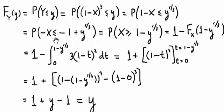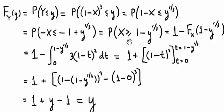Now if we subtract 1 from both sides of the inequality, we get the probability that negative X is less than or equal to negative 1 plus y to the 1 third. And then multiplying through by negative 1, we get the probability that X — changing the sign from less than or equal to a greater than or equal to — is 1 minus y to the 1 third power. Well that equals 1 minus the cumulative distribution function of X evaluated at X equals 1 minus y to the 1 third.